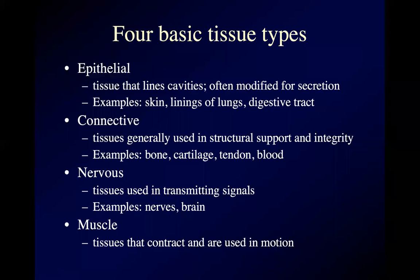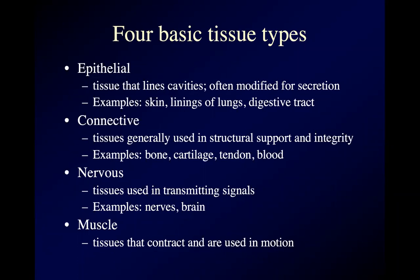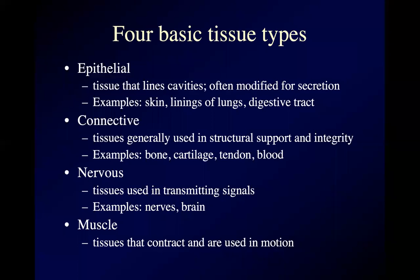Bone is an example of connective tissue. Your tendons — like your Achilles tendon at the back of your heel, or the great big tendon that connects your trapezius muscle to the back of your skull, or the hamstrings tendons at the back of your knee — that's all connective tissue. Cartilage is connective tissue: what's under the skin of your nose and external ears, and the cartilage that forms the surfaces that rub together in your joints, where if it goes away you have bad arthritis. We also count blood as a connective tissue.